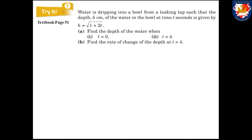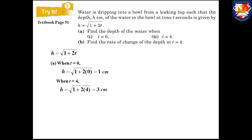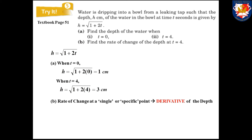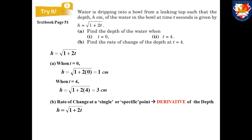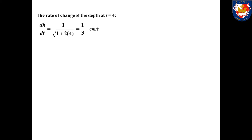To find the depth when t equals 0, substitute t = 0: h equals the square root of (1 + 2×0), which gives 1 cm. When t equals 4, substitute t = 4: h equals 3 cm. For Part B, to find the rate of change of the depth we find the derivative of h. Writing h as (1 + 2t) to the power of one half, dh/dt equals (1/2)(1 + 2t) to the power of negative one half times 2, which simplifies to 1 over the square root of (1 + 2t). So the rate of change at t = 4 is 1/3 cm per second.